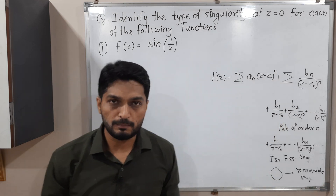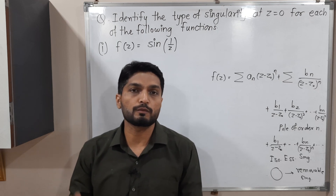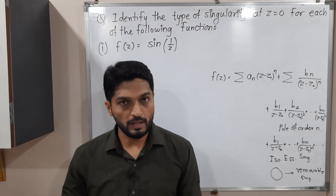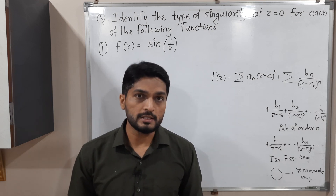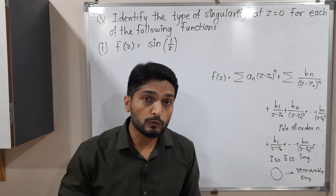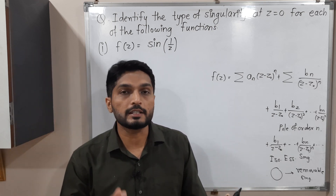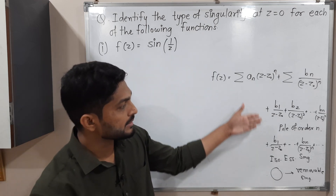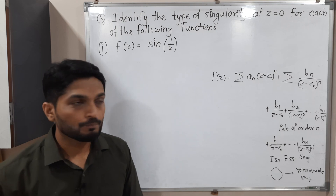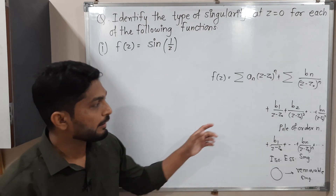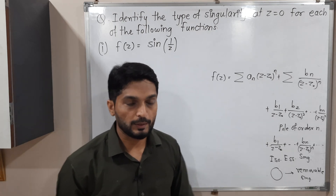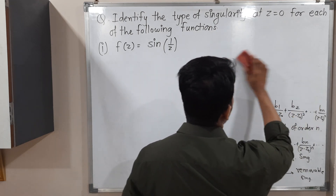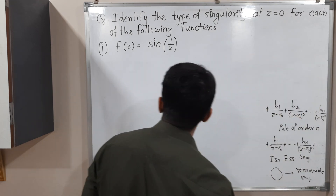One more singularity we have seen, but with very few examples: that is non-isolated essential singularity. That means we have infinitely many singular points and they are converging to a single point — we say it is non-isolated essential singularity. But our main focus is on the first three types of singularities. For this function also, we have to find which type of singularity it is. We have solved this type of problem in previous videos, so it will be very easy for us.